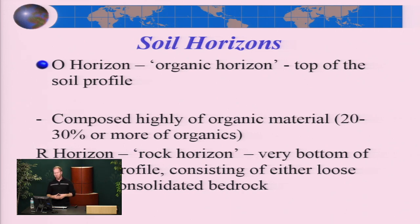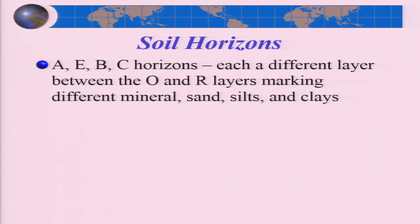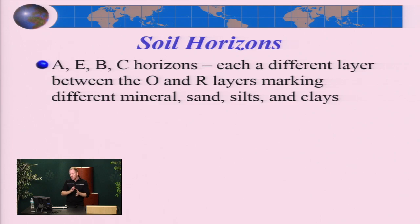The O horizon — the organic layer — is the top of the soil profile, made up of roughly 20% to 30% organic material. In a rainforest or swampy area it can be 30% to 40%; in a desert region that lacks rain and plants, it's closer to 5% to 10%. The R horizon — the rock horizon — is the very bottom of the soil profile, the solid rock layer. All those other layers — A, E, B, C — are based on sand, silt, and clay mixtures, with literally hundreds of combinations. We'll stick with just the O and R horizons.